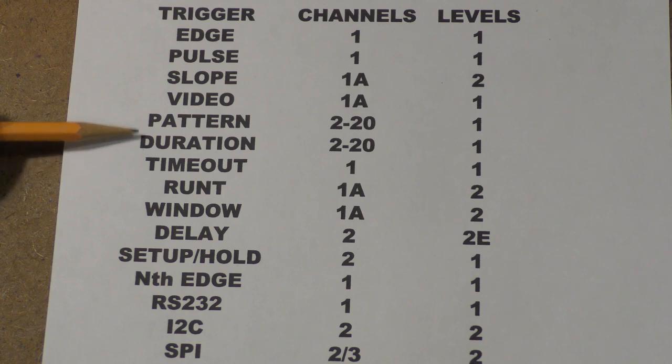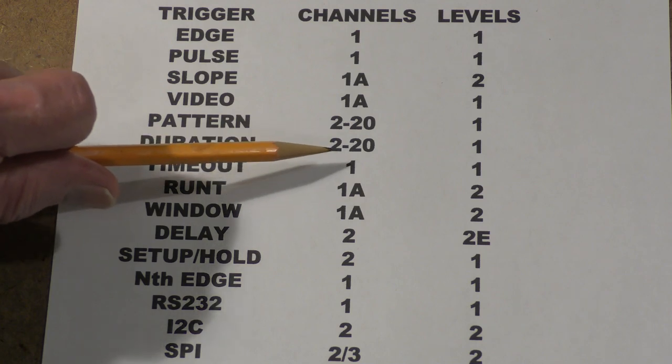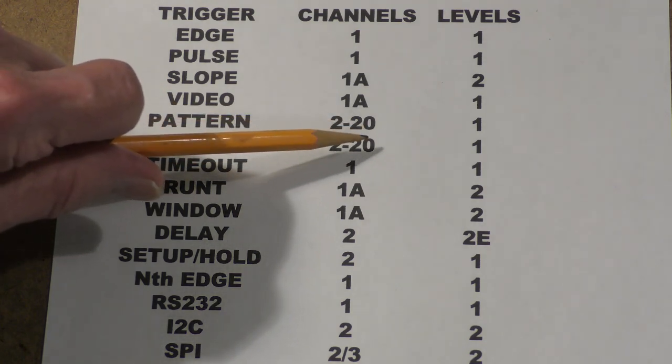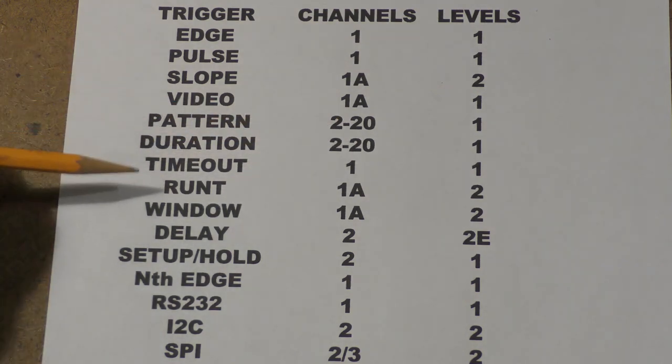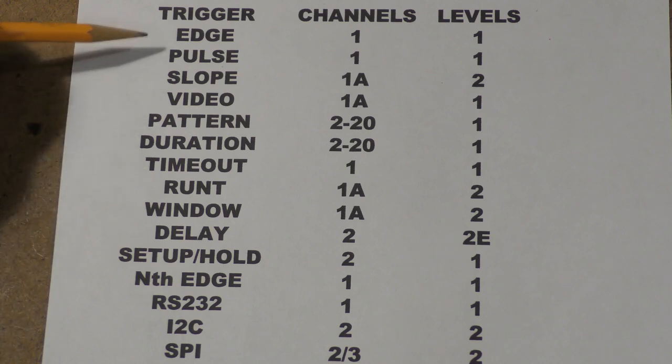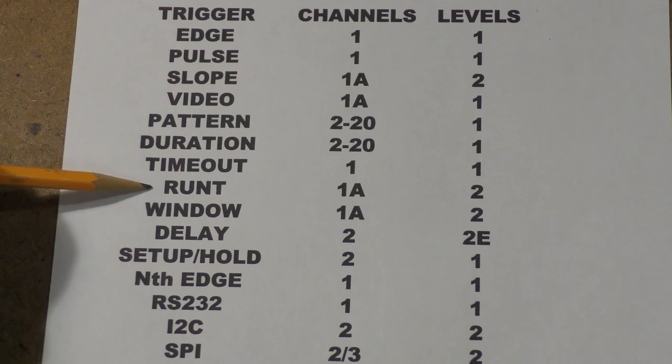Now what you'll discover is that the pattern and duration are very similar to one another and they both use multiple channels, can be as up to 20 channels but as few as two channels. The timeout trigger we'll see is actually very much like the pulse trigger, and we'll talk about that in a minute, and then we'll finish by looking at the runt trigger.